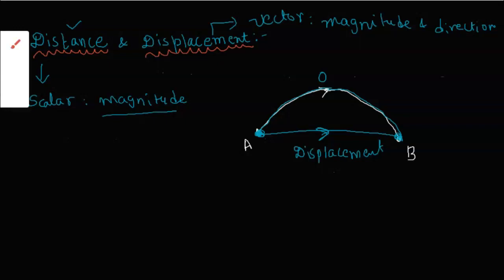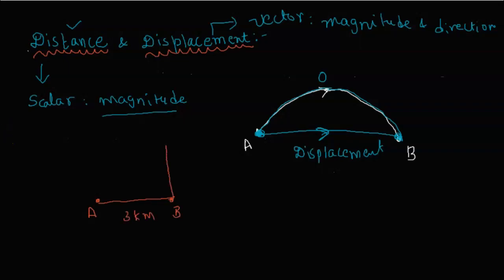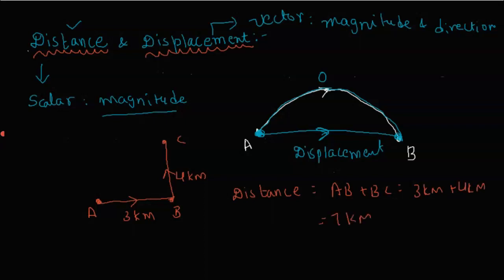Here is a small example. There is a boy who started from A and traveled to reach B — that distance is 3 km. Then he turned left and reached C, which is 4 km. If you look at the total distance, it equals the total path: AB plus BC, which is 3 km plus 4 km. The distance equals 7 km.